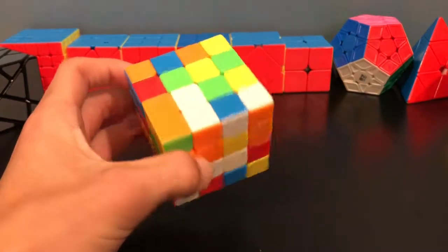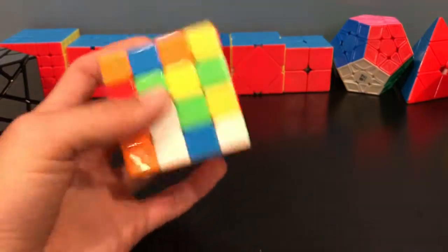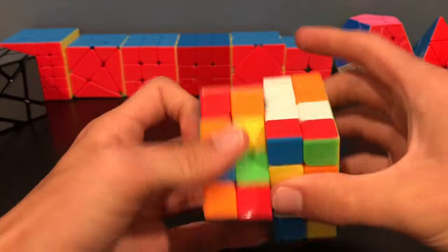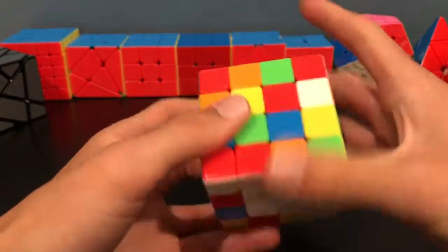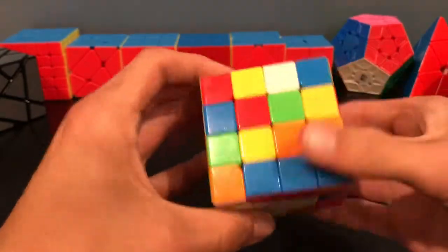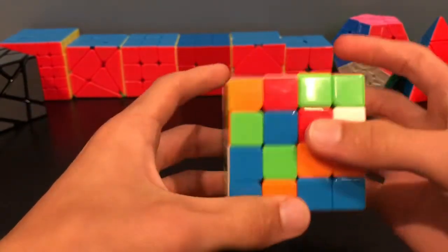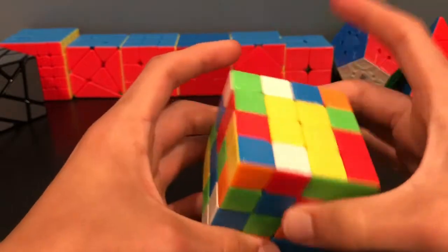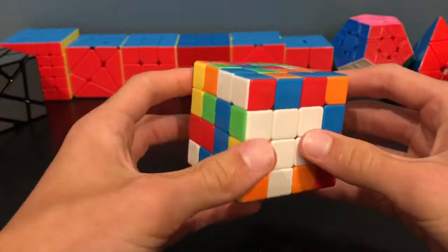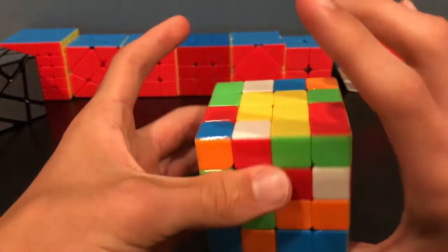So the first step of the Yao Method is the same as the reduction method. You'll get two opposite centers. I'm not really going to go over this because I assume you know how to do this. I like to start with white and yellow, but since this is the advanced method, it's perfectly fine to just go color neutral. Maybe you'll do red and orange, blue and green, but you just have to get a center here and a center here.